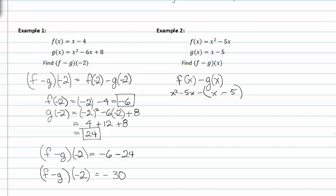From here, we distribute the negative through, and we have x squared minus five x minus x plus five.